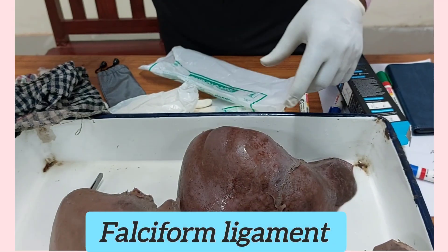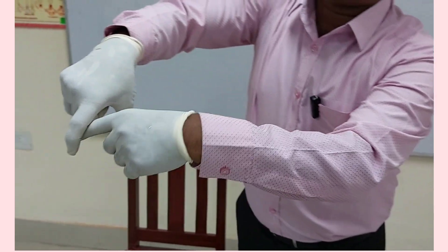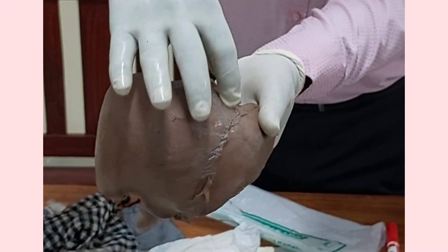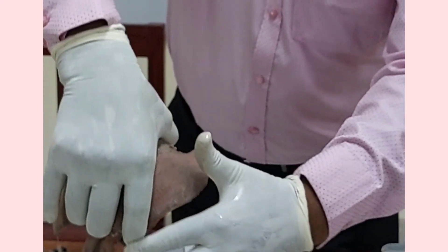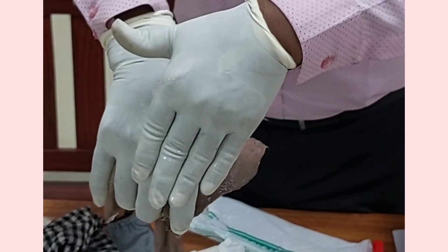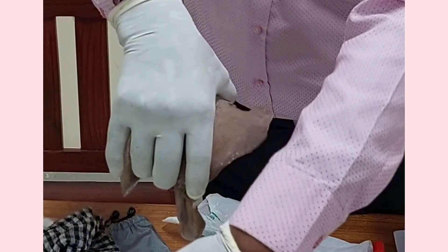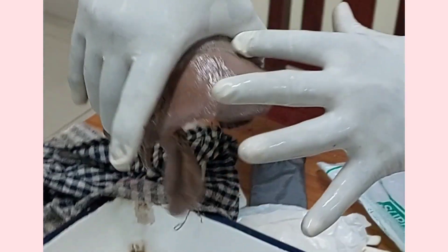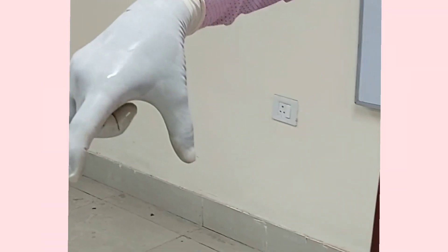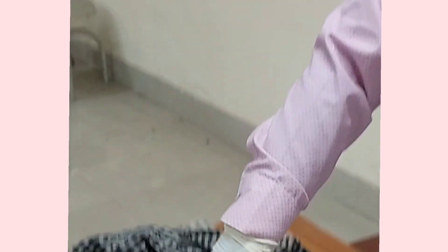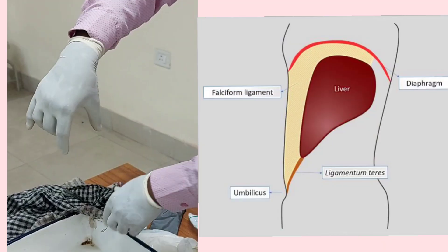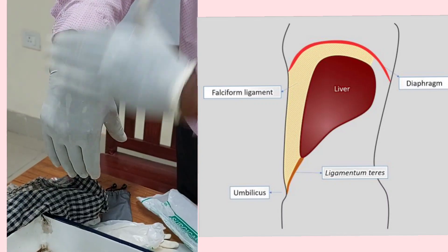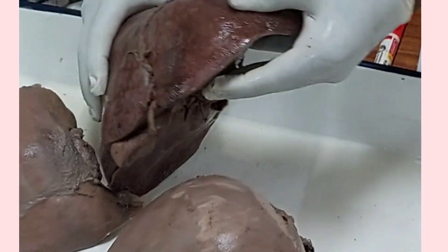Falciform means sickle-shaped. This ligament is having two borders. The concave margin is attached along the liver, along the anterior surface and superior surface. And the convex margin is attached to the anterior abdominal wall and under surface of the diaphragm up to the umbilicus. This is called the falciform ligament and it is having two layers.